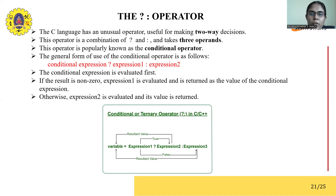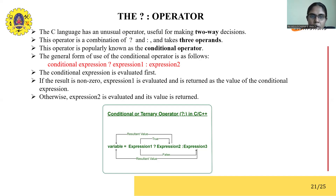Before the question mark we have one operand, between the question mark and colon we have another operand, and after the colon we have the third operand. This operator is popularly known as the conditional operator. The general syntax is: condition expression followed by question mark, then expression one, colon, expression two.